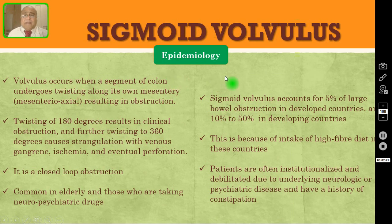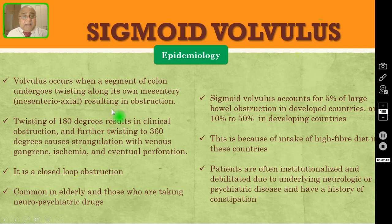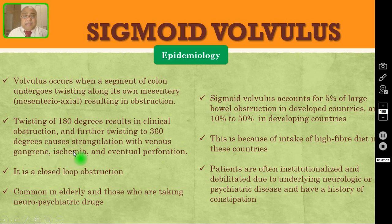So what is a volvulus? Volvulus occurs when a segment of colon undergoes twisting along its own mesentery — that is the mesenterico-axial axis — and that results in obstruction. Twisting of 180 degrees results in clinical obstruction, and further twisting to 360 degrees causes strangulation with venous gangrene, ischemia, and eventually perforation and peritonitis. This is an example of closed loop obstruction.